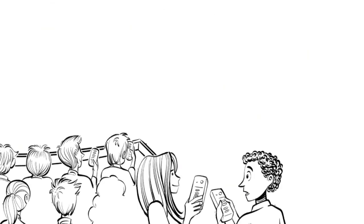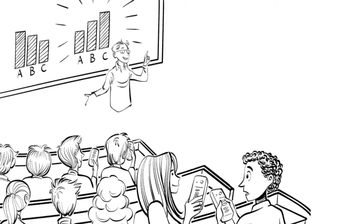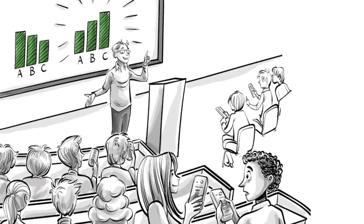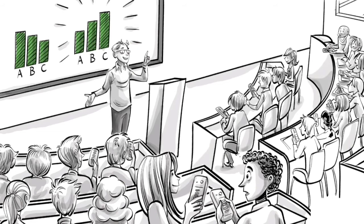Then there will be a second clicker vote, and only now the results will be shown. Typically, the second vote will be much better than the first, as students learn a great deal from their discussions. An ideal question will have about a third correct on the first vote and 85% correct on the second. All this takes around seven minutes.